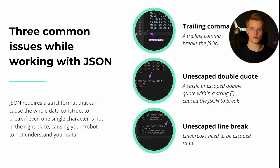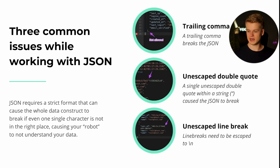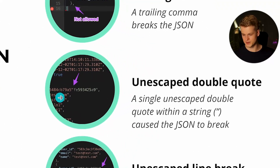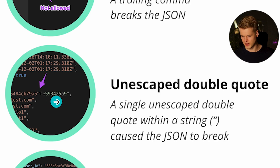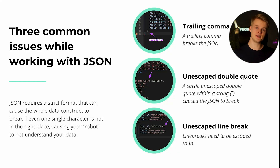The second mistake is unescaped double quotes. No-code tools usually validate this for you, but some don't. If you include variables containing text that has double quotes inside it, it can break your JSON. As you can see in the screenshot, properly interpreted strings are shown in orange, while the broken parts appear gray with green numbers — indicating something is off due to unescaped double quotes. To escape them, simply put a backslash before the double quote.